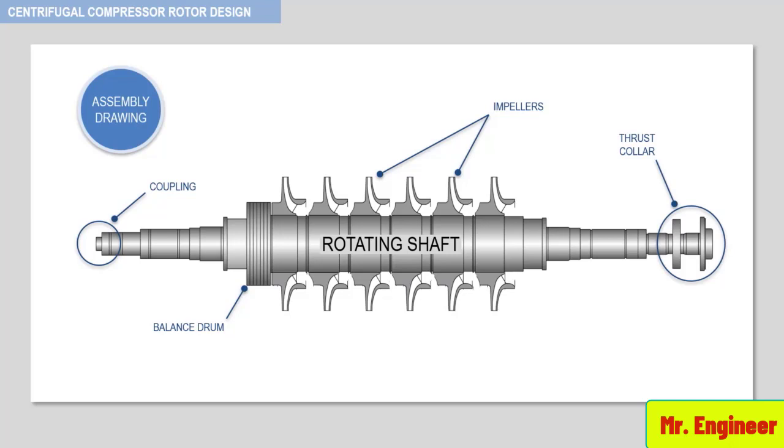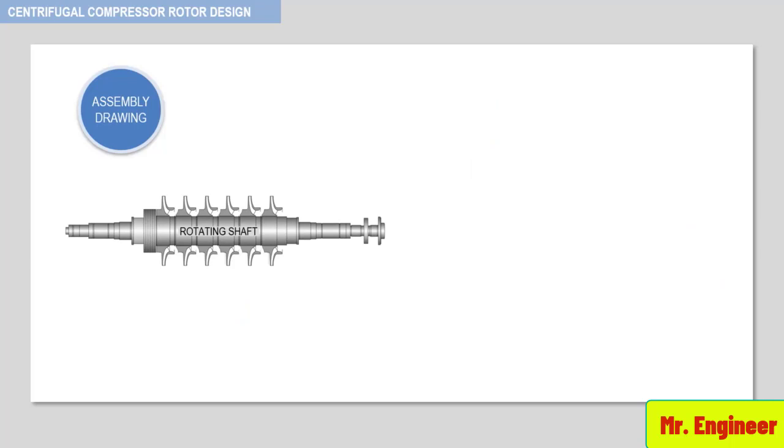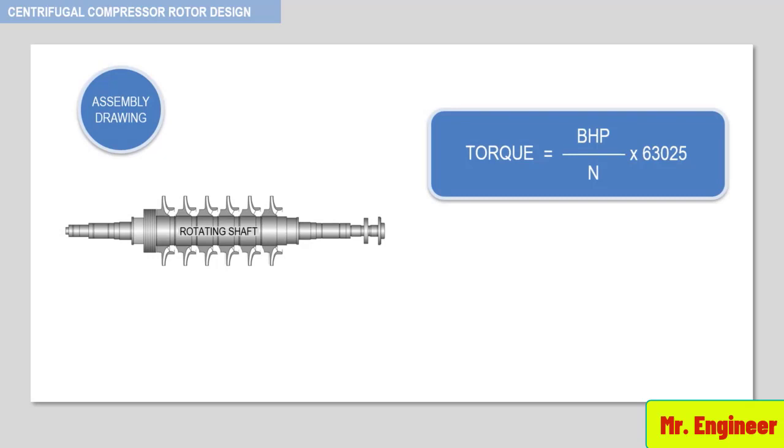The rotor shaft end must be designed to transmit the maximum torque provided by the driver. Torque is equal to horsepower per unit speed, as seen here, where BHP is the brake horsepower and N is the shaft speed.